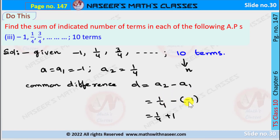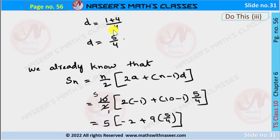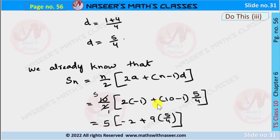Substituting, d = 1/4 − (−1) = 1/4 + 1. Taking LCM of 4, the numerator becomes 1 + 4 = 5, giving d = 5/4. Applying the formula Sₙ = n/2 × (2a + (n−1)d) with n = 10, a = −1, d = 5/4: S₁₀ = 10/2 × (2×(−1) + (10−1)×5/4). Cancelling gives 5 × (−2 + 9×5/4).